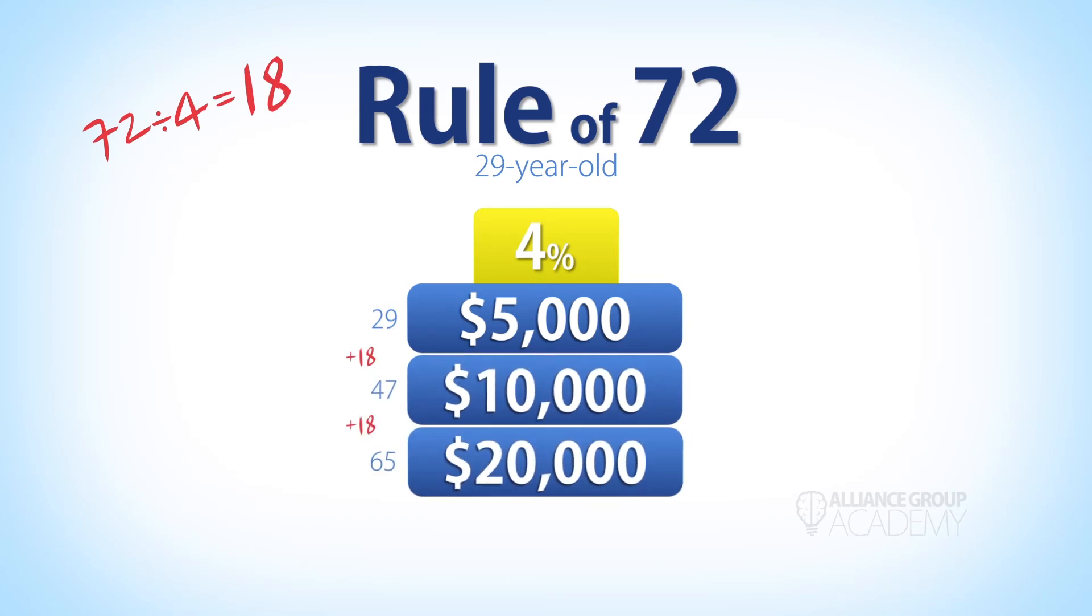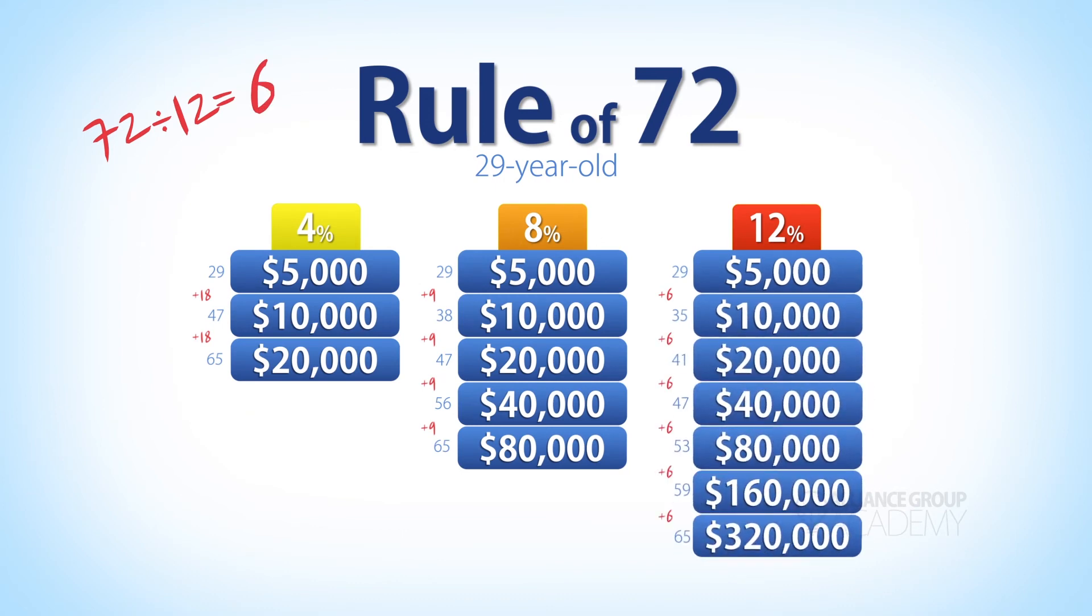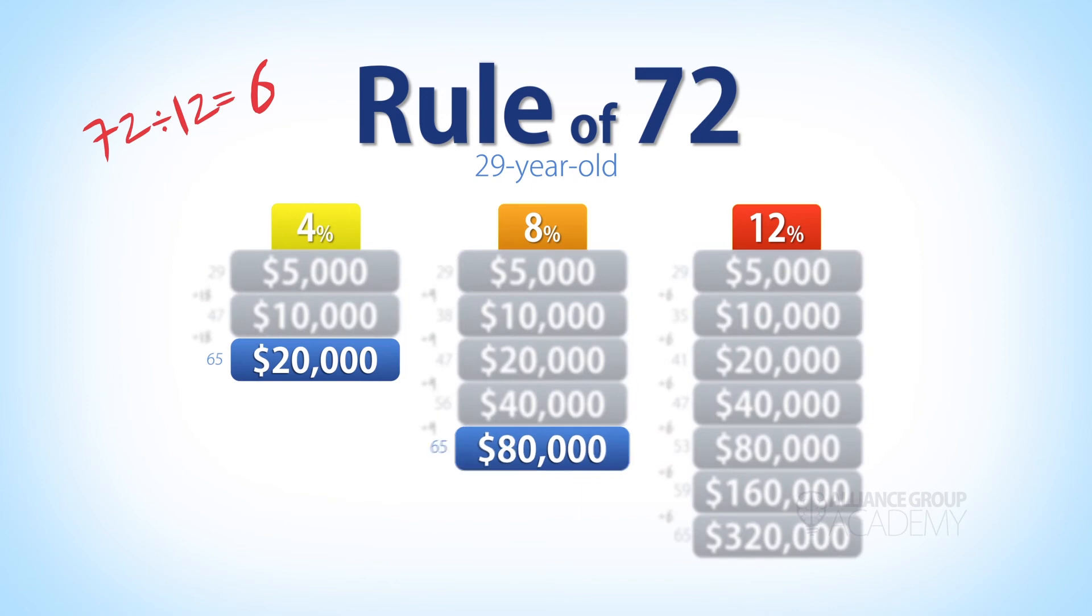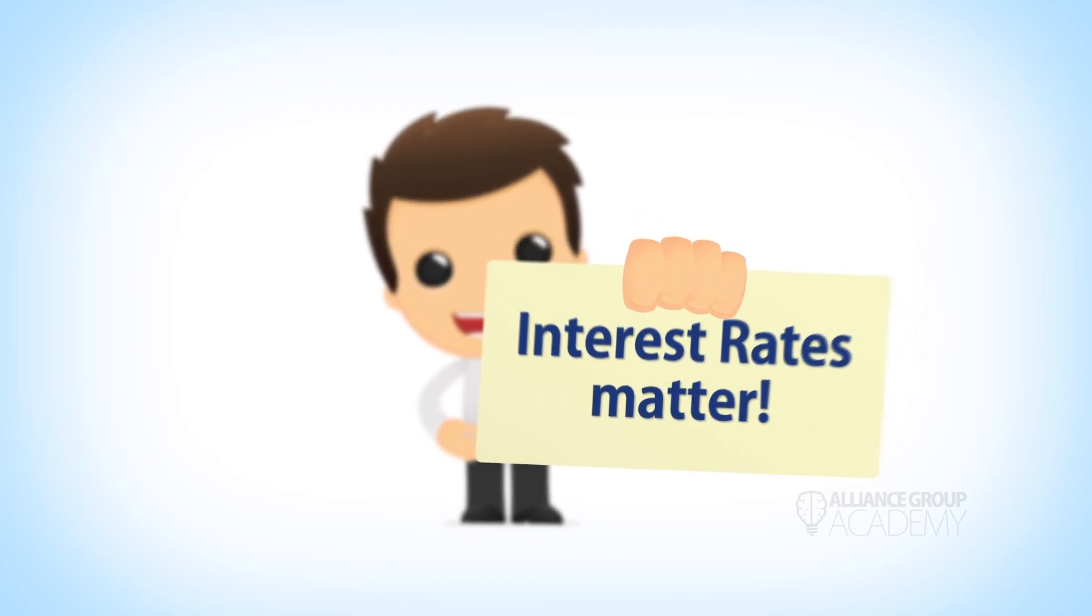So by doubling your interest rate from 4% to 8% you actually quadruple your money. And by tripling your rate from 4% to 12% you 16-tuple your money. Is that a word? It is now. Interest rates matter. The Rule of 72 helps us understand just how much they matter.